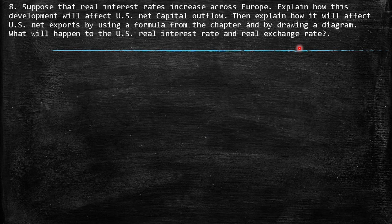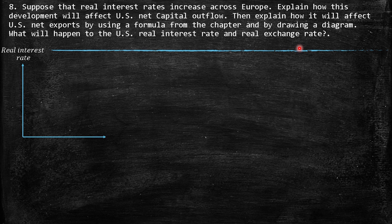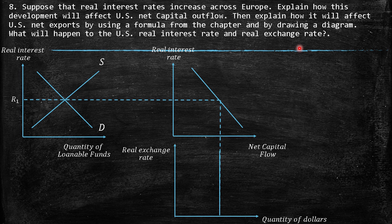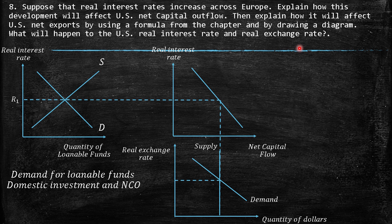Question 8: Suppose that real interest rates increase across Europe. Explain how this will affect US net capital outflow, then explain how it will affect US net exports using a formula from the chapter and a diagram. What will happen to the US real interest rate and real exchange rate? As a consequence of the increase in real interest rates in Europe, what we have is called a capital flight.